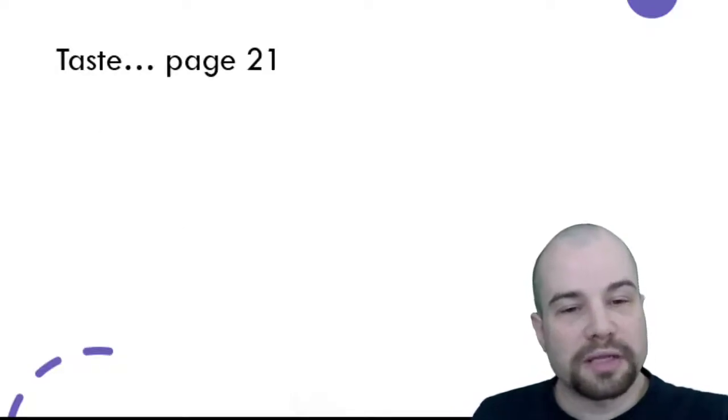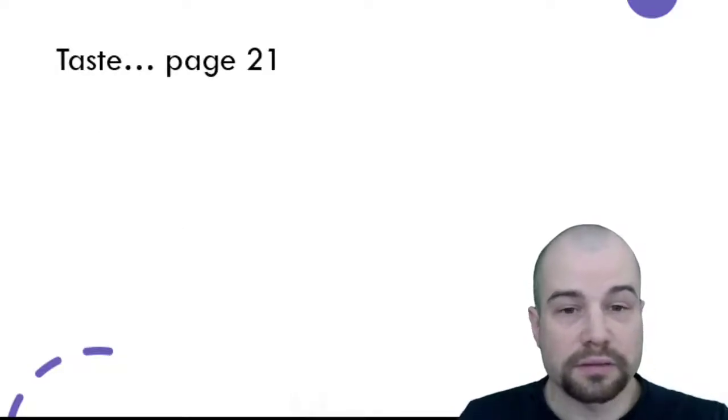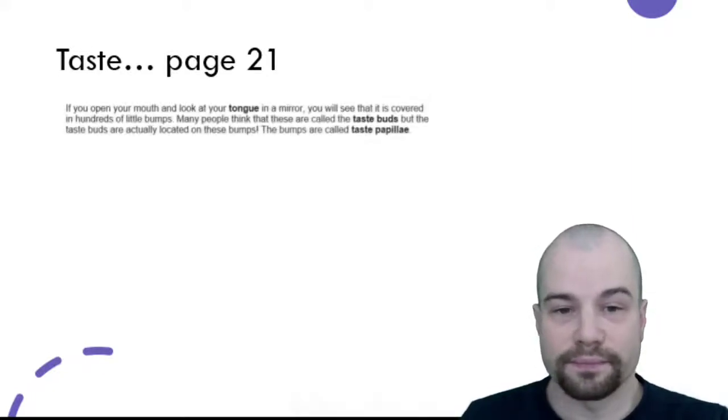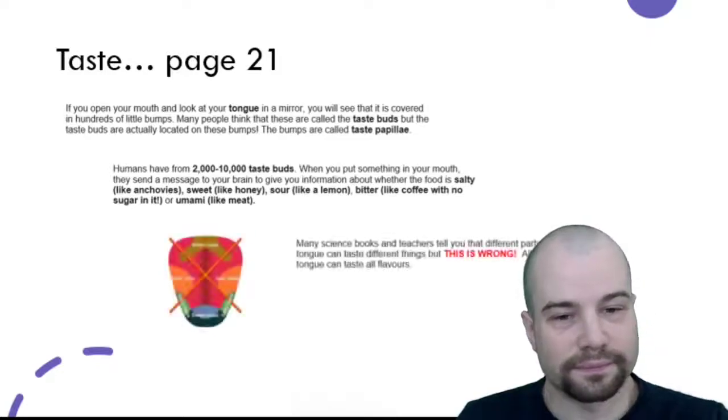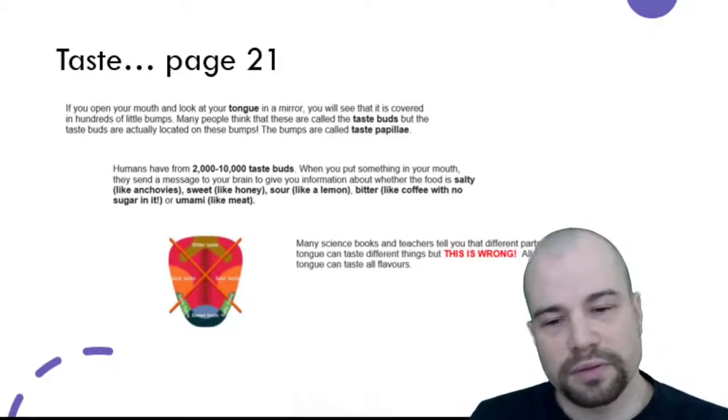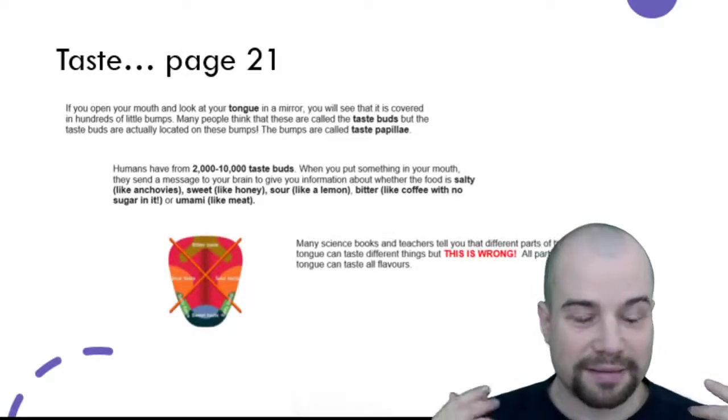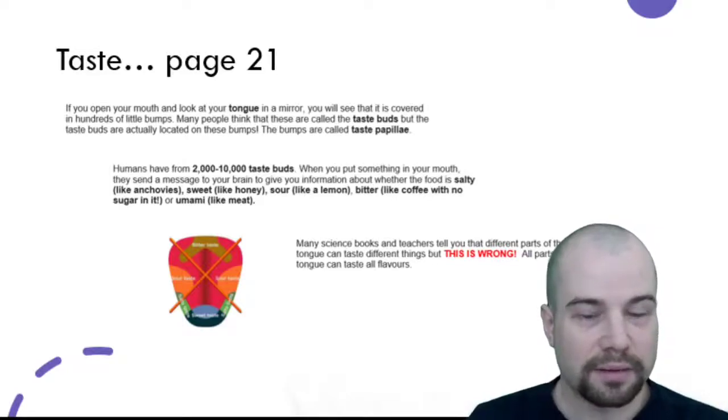We then looked at page 21 and we started to read the information there. We went quite quickly. The most important thing was that the map of the tongue is wrong.